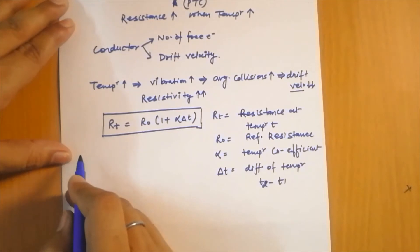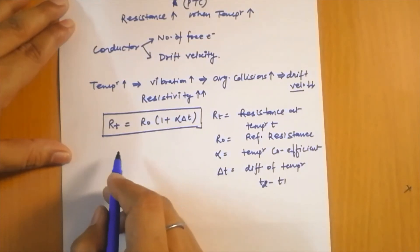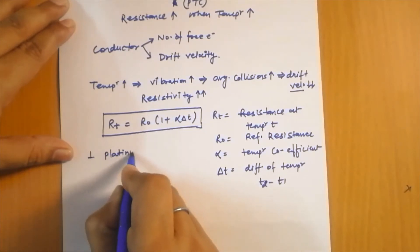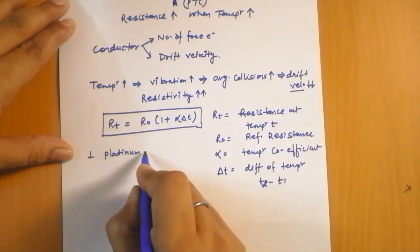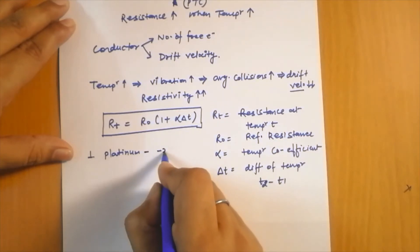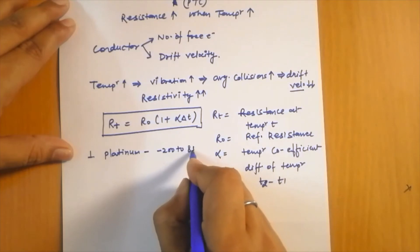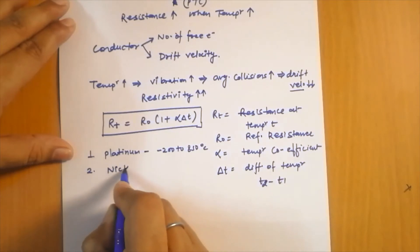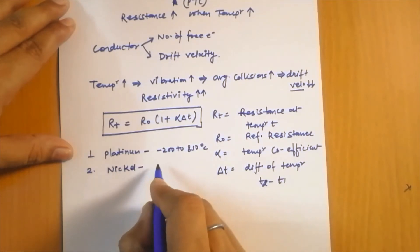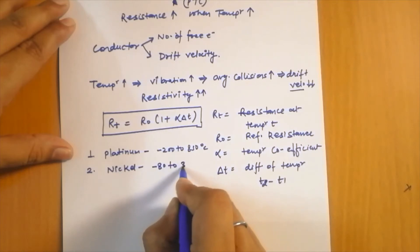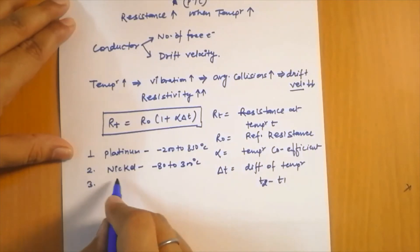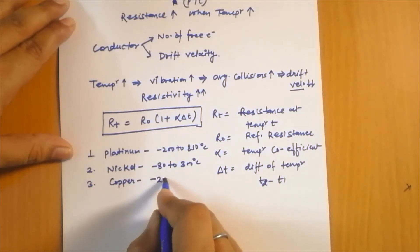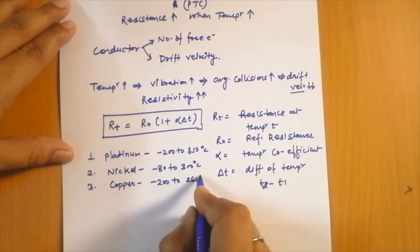The materials used in the construction of RTDs are: platinum, used in the temperature range of minus 200 to 850 degrees centigrade; nickel, used for a temperature range from minus 80 to 300 degrees centigrade; and copper, used for a temperature range of minus 200 to 260 degrees centigrade.